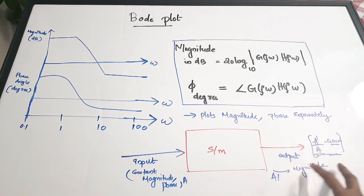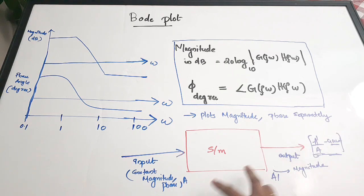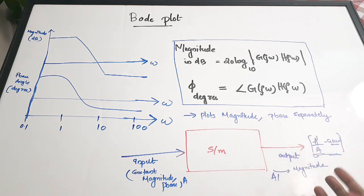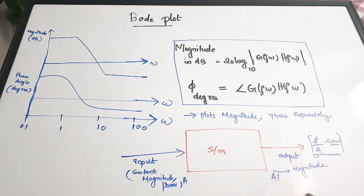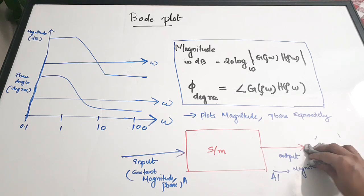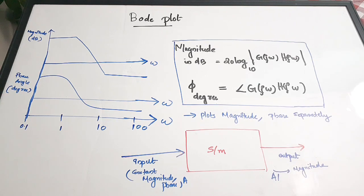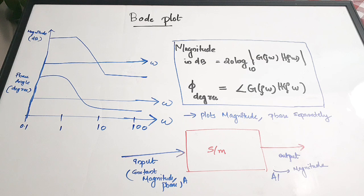I am explaining the term 'gain' because towards the end we have to define certain criteria for the system to be stable from the bode plot. In that case we will be talking about the gain margin and the phase margin. So gain is the variation in the magnitude — if there is a change in the magnitude from the initial input to the output. There will also be some variation in the phase. That is why we plot magnitude and phase separately.